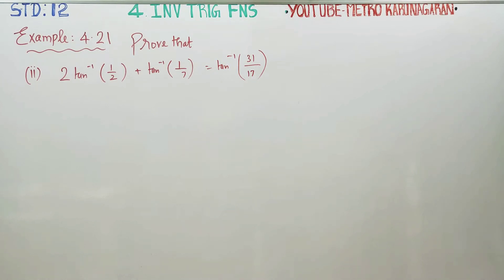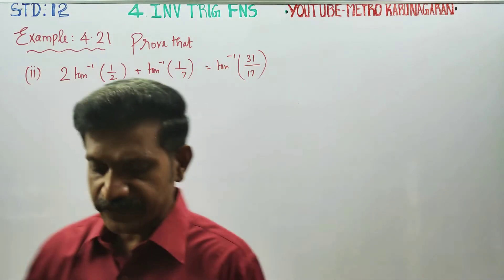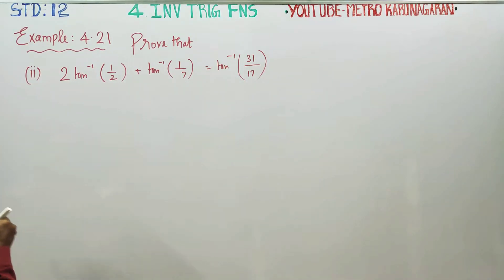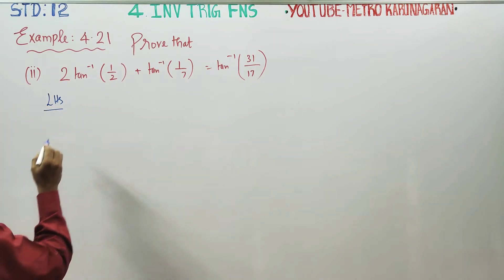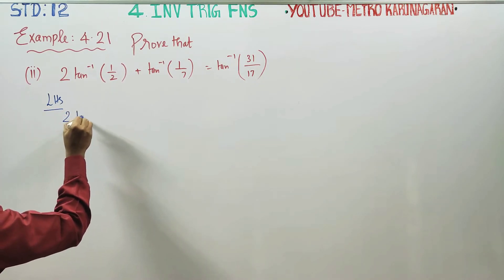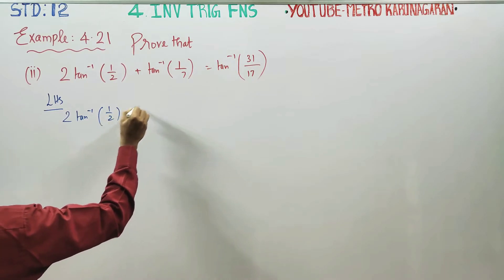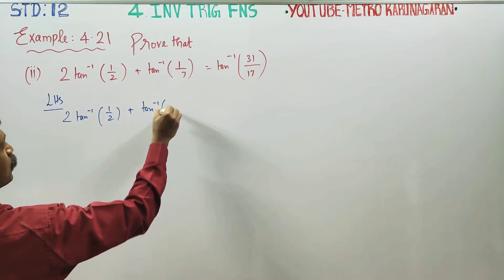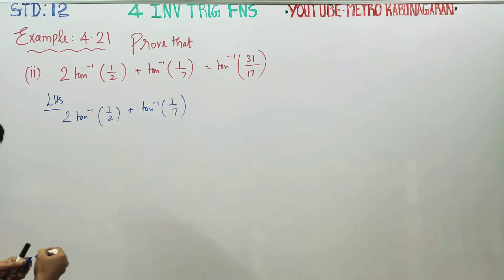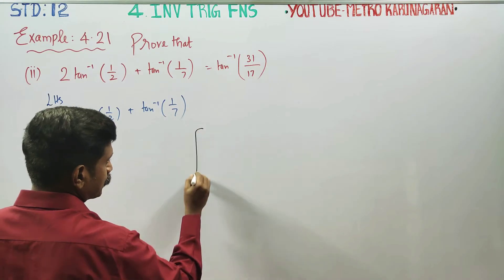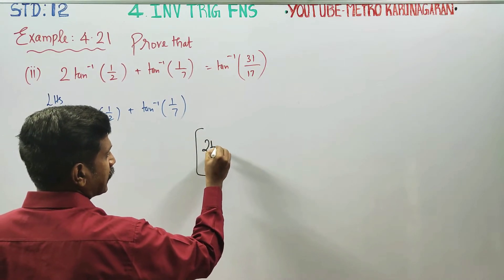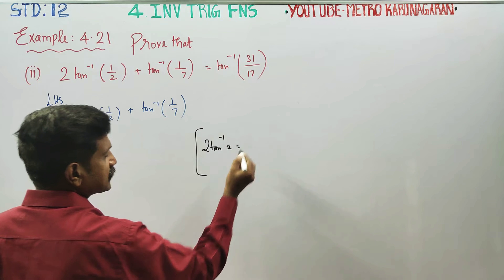Dear students, in inverse trigonometric functions example 4.21, we have to prove this. I am going to start with the LHS: 2·tan⁻¹(1/2) + tan⁻¹(1/7). In the term 2·tan⁻¹(1/2), we use the formula 2·tan⁻¹(x) = tan⁻¹(2x / (1 - x²)).